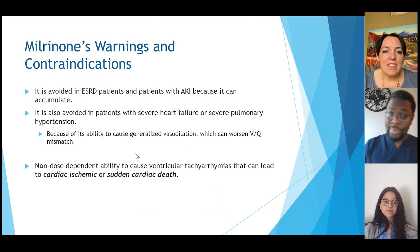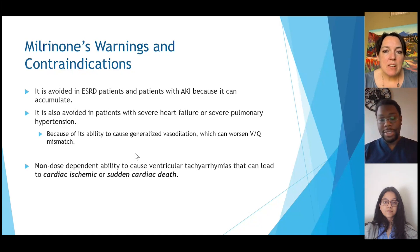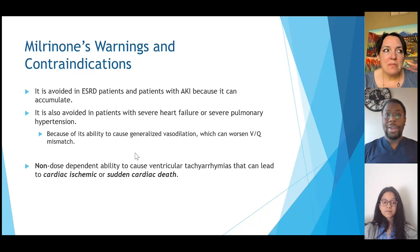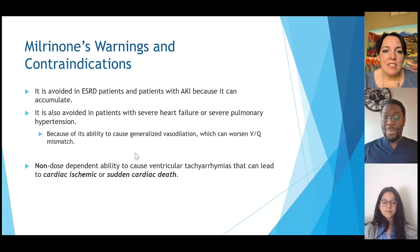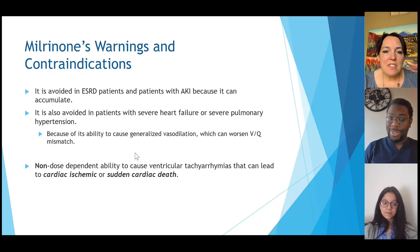There are some warnings and contraindications with milrinone — it's not a perfect drug. It tends to accumulate in patients with kidney disease, whether ESRD or AKI. We also try to avoid it in patients with severe pulmonary hypertension because it can cause vasodilation, which can worsen perfusion and oxygenation in the lungs — the larger the pulmonary arteries, the more fluid can leak out and worsen pulmonary edema. Like dobutamine, it also has a non-dose-dependent ability to cause arrhythmias, which can unfortunately lead to sudden cardiac death and ischemia.